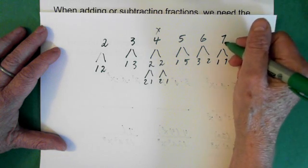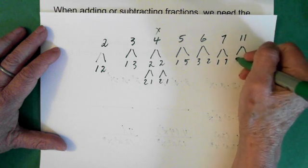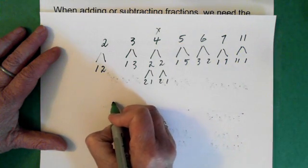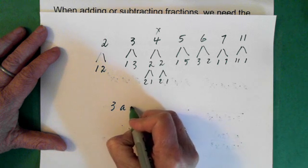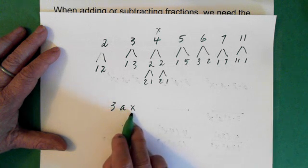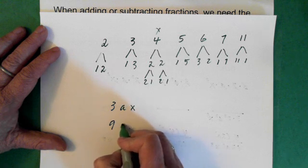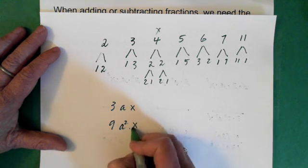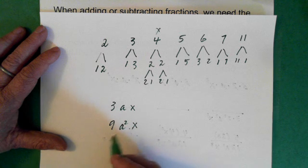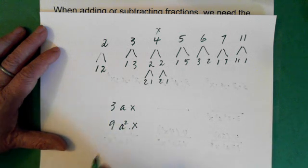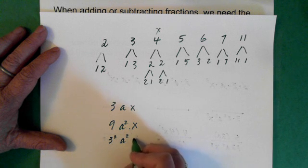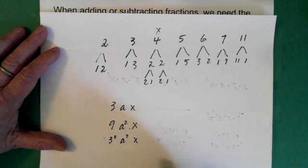The next prime number after 7 is 11 because that's 11 times 1. Now, when we're dealing with algebraic terms, if we have 3ax, for example, 3 is a prime number, a is a prime number, and x is a prime number. If we had 9a squared x, we don't say this is a times a — we count the fact that it's squared. And we reduce the 9, which is not a prime number, to a prime number, and we say that this is 3 squared times a squared times x. So these become our prime numbers, and the 3 is squared.